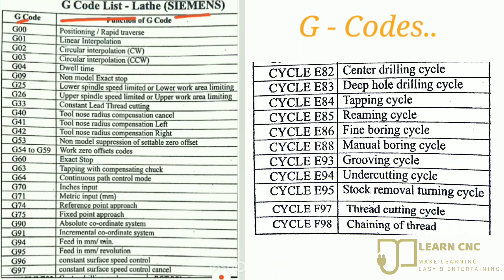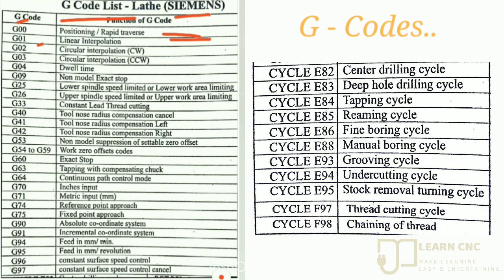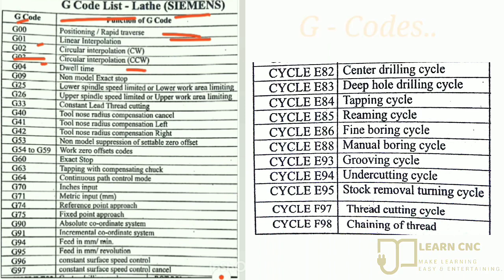First is G00, which is used for rapid traverse or rapid movement. Then G01 is used for linear interpolation, that is, linear movement. G02 means spindle on and rotate in clockwise direction. G03 means spindle on and rotate in counterclockwise direction. G04 means dwell time, also called stop time. Then G09 means non-modal exact stop.